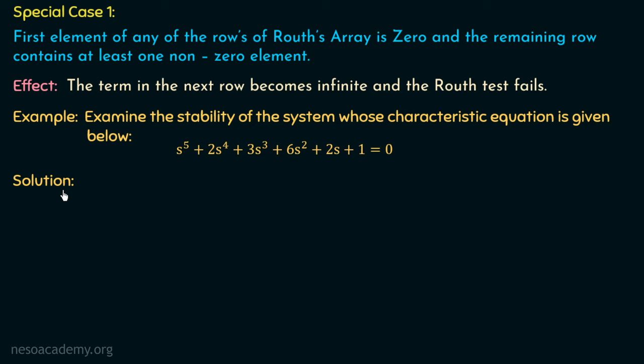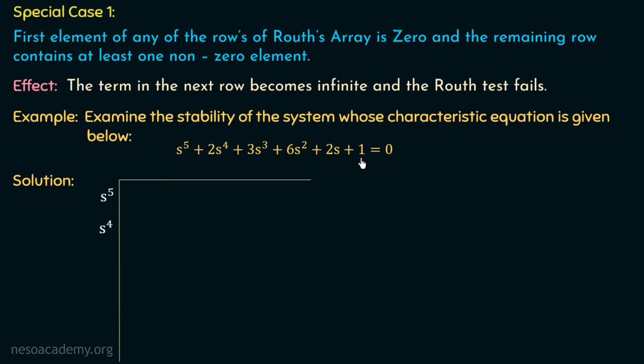To apply the RH criteria, we first have to form the Routh's array. We have s⁵ as the first row and s⁴ in the second row, and we can fill these two rows directly using the coefficients of the characteristic polynomial. The coefficients are 1, 2, 3, 6, 2, and 1. If we fill these two rows in the vertical manner, we don't have to follow the alternate fashion — we fill them directly as 1, 2, 3, 6, 2, and 1.